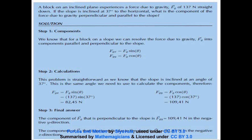Though that is not our final answer — our final answer needs to be stated in words. For step three: the component of Fg that is perpendicular to the slope is Fgy, equal to 109.41 Newtons in the negative y direction, because it's going down. The component of gravity that is parallel to the slope is Fgx, equal to 82.45 Newtons in the negative x direction as well. Quite a straightforward example.